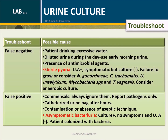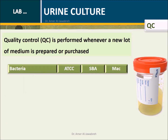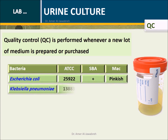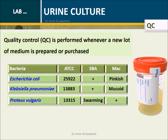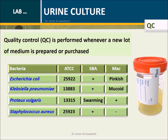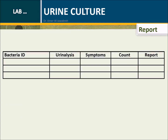Troubleshoot: a table shows troubleshoots and possible causes. Quality control is performed whenever a new lot of medium is prepared or purchased, using a list containing ATCC bacteria with expected results. Report: use this form to report results.